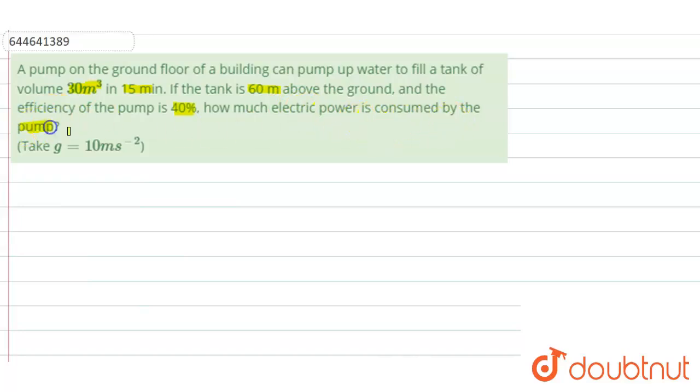Let us now try to find out the rating of the pump or the power consumed by the pump. So this is the situation: we have a pump at the ground floor and there is a tank at a height of 60 meter from the ground floor. So the water is being pumped from this pump to the tank to fill the tank and it only takes about 15 minutes to fill the tank.